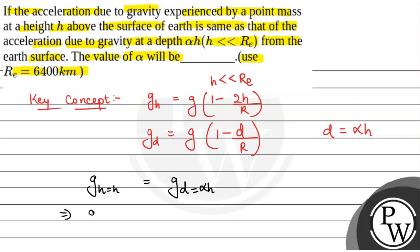So we will just put the values: we will have g times (1 minus 2h/R), that is equal to g times (1 minus alpha h/R), putting the value alpha h in place of d.